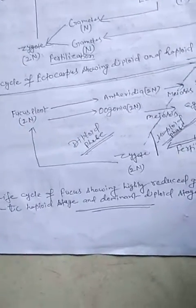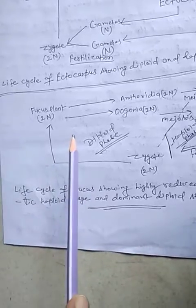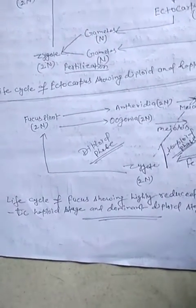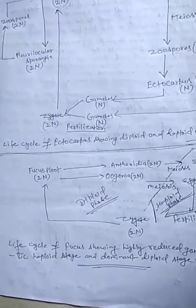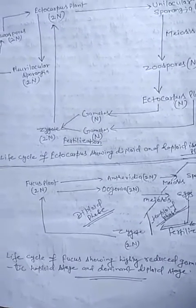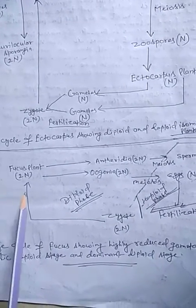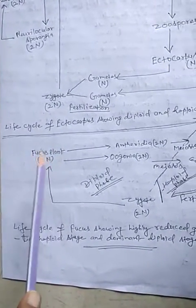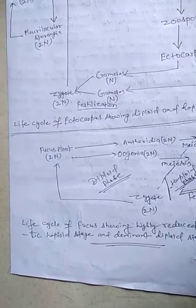In Fucus, the diploid generation is dominant while the haploid generation includes only the gametes. All other stages of the life cycle are diploid. This shows the diplontic type of life cycle, a condition also found in higher plants. In most algae the gametophytic generation is dominant, but in Fucus the sporophytic generation is dominant.